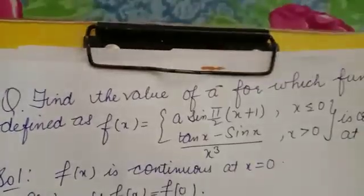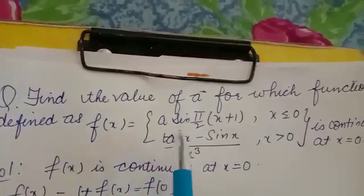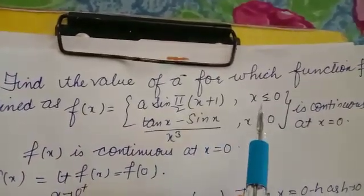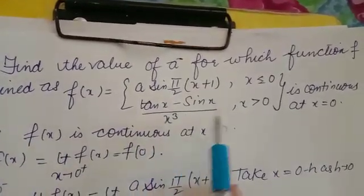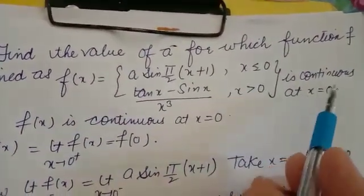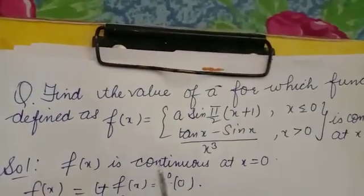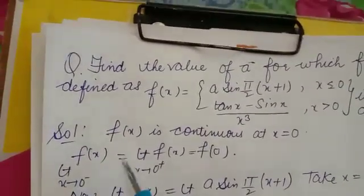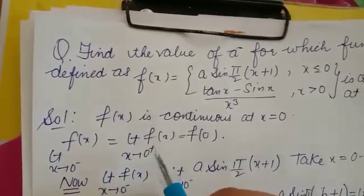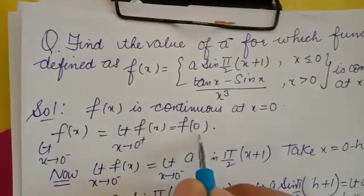We are discussing the next question: find the value of a for which the function f(x) = a·sin(π/2·x + 1) where x ≤ 0, or (tan x − sin x) / x³ when x > 0, is continuous at x = 0. According to the definition of continuity, if f(x) is continuous at x = 0, then the left-hand limit equals the right-hand limit equals f(0). This is the condition for continuity of the function.